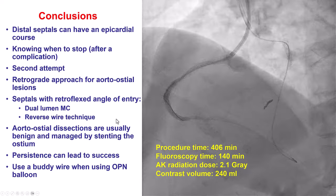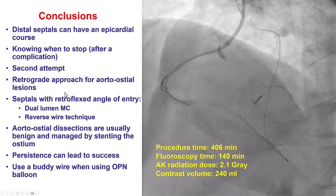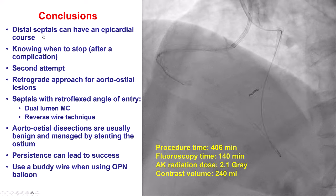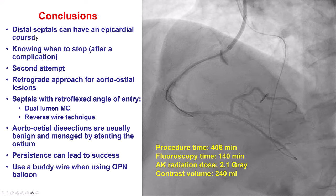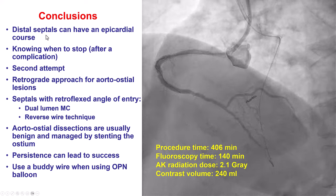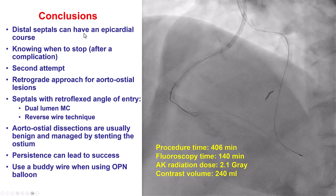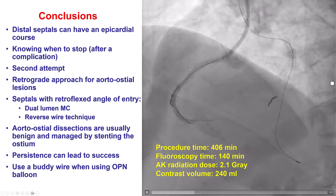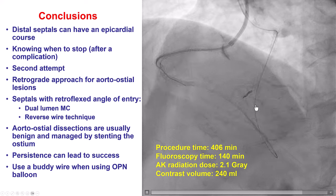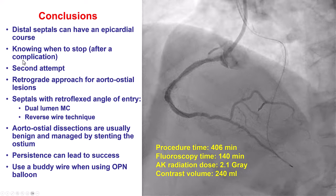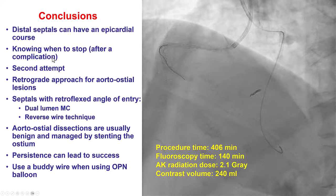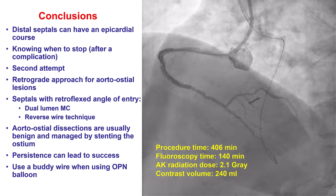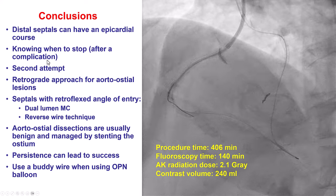Several lessons from this case. The first is that one should always ascertain that a septal is indeed a septal and not an epicardial. In the first attempt at our institution, we advanced the wire into what appeared to be a septal but ended up being an epicardial, causing a small perforation that required a coil for sealing. If a complication happens, in most cases it is best to stop the case and bring the patient back to start fresh.